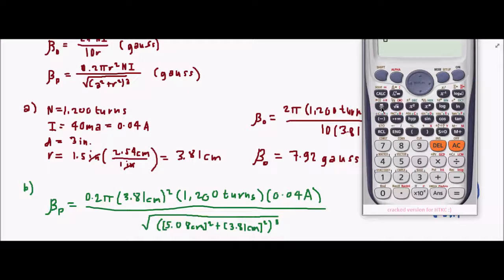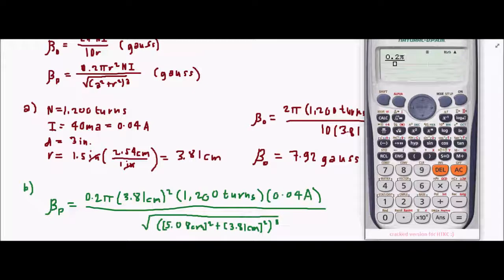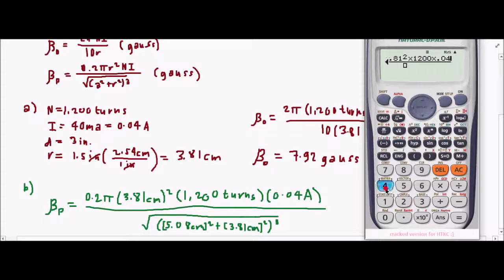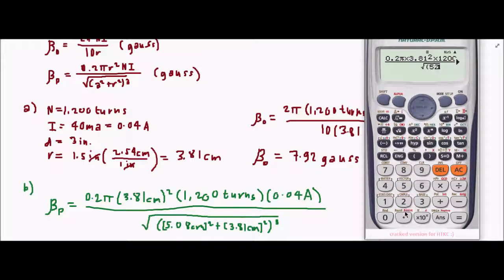Let's solve for this one. We have 0.2π times 3.81 squared times 1,200 times 0.04, all over the square root of (5.08 squared plus 3.81 squared) to the power of three.